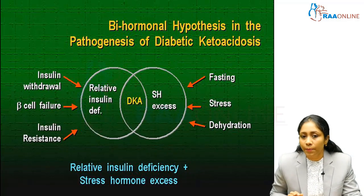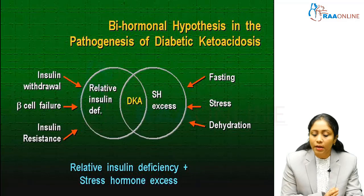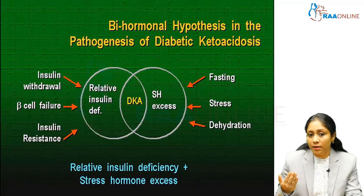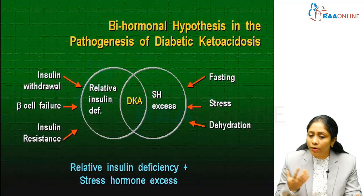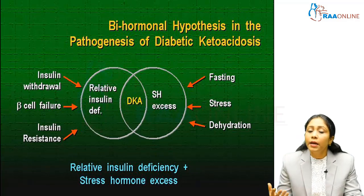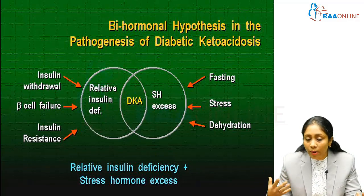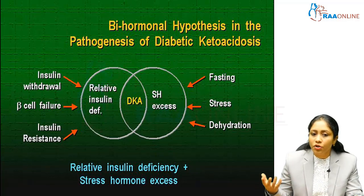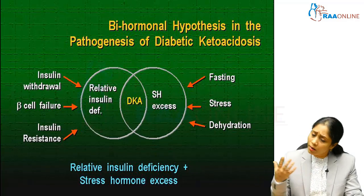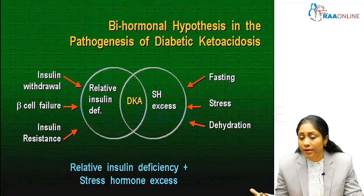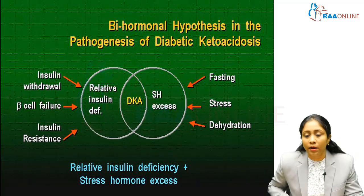The bihormonal hypothesis in the pathogenesis of DKA largely involves relative insulin deficiency — due to insulin withdrawal, such as a missed dose, or progressive beta cell failure in type 1 or type 2 diabetics. Insulin resistance due to acute infection or acute medical comorbidity raises counter-hormone levels. Stress hormone excess from fasting, physical or psychological stress, and dehydration all play a very important role in the pathogenesis of diabetic ketoacidosis.